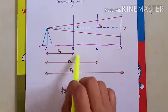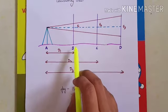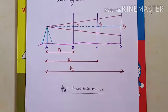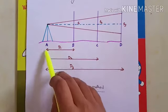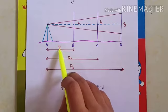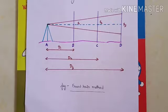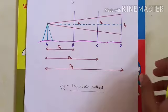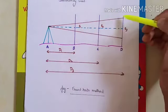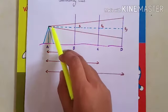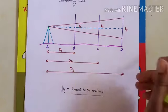From the tachymeter, readings are taken to three stadia rods at distances d1, d2, and d3 from station A. The staff intercepts are s1, s2, and s3 respectively. Depending on the angle and staff intercept, these distances are calculated.